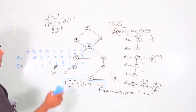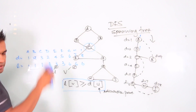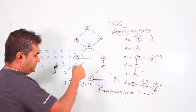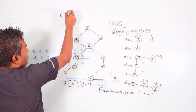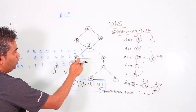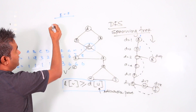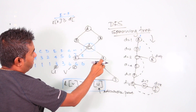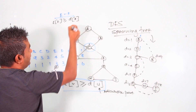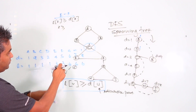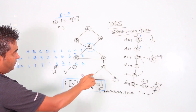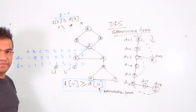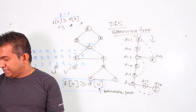Let's try E and F. E is parent, F is child. Lowest index of F is 3, depth index of E is 4. Since 3 is not greater than or equal to 4, E is NOT an articulation point.